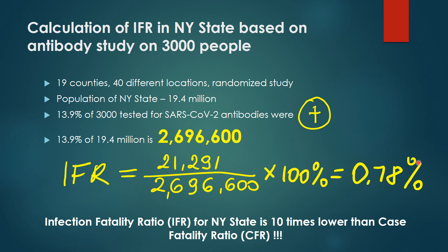Having this number, we can now calculate IFR, which, as you see here, is 0.78%. So, infection fatality ratio for New York State is 10 times lower than case fatality ratio, which is a very well-known fact.